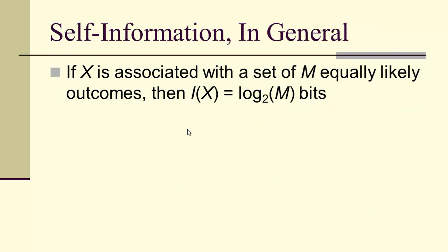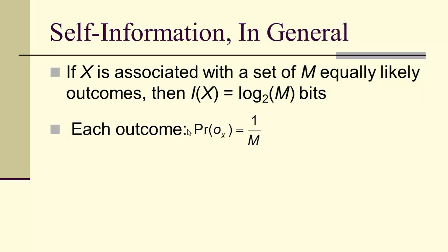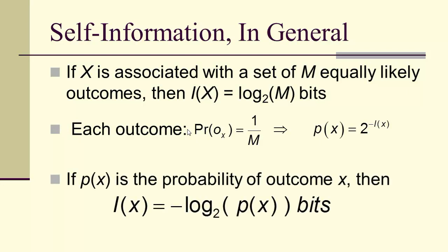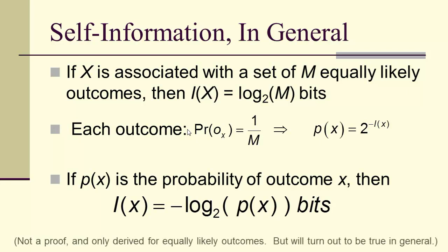In general, if x is associated with a set of M equally likely outcomes, then the self-information is log base 2 of M. The probability is 1/M, so the probability equals 2 to the negative self-information, or equivalently the self-information is the negative log base 2 of the probability in units of bits. This isn't a formal proof, and we've only looked at equally likely outcomes, but it does in general turn out to be true.